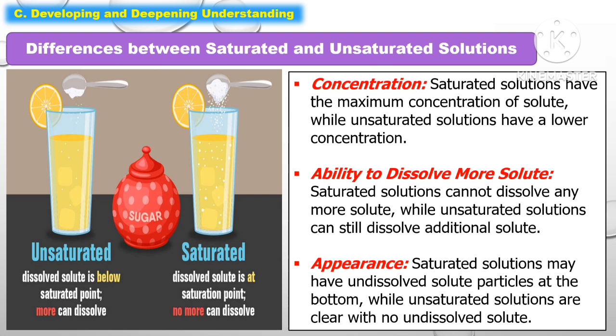The following are the differences between saturated and unsaturated solutions. The first is concentration: saturated solutions have the maximum concentration of solute, while unsaturated solutions have a lower concentration. The second is the ability to dissolve more solute: saturated solutions cannot dissolve any more solute, while unsaturated solutions can still dissolve additional solute. The last difference is appearance: saturated solutions may have undissolved solute particles at the bottom, while unsaturated solutions are clear with no undissolved solute.